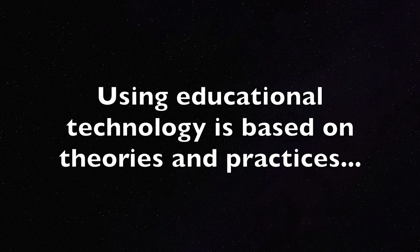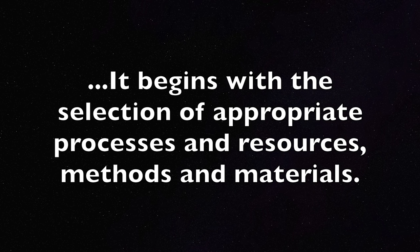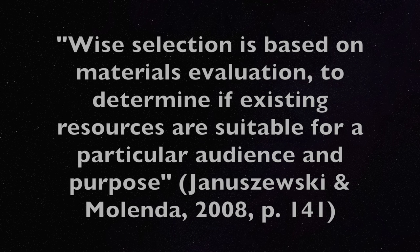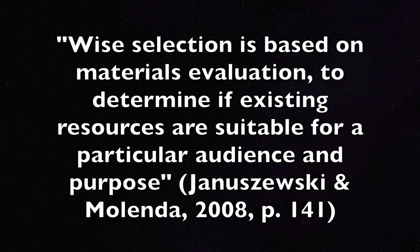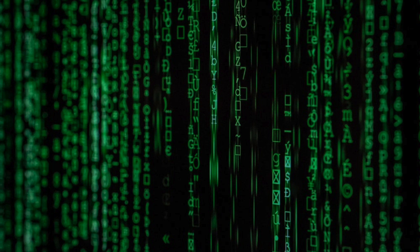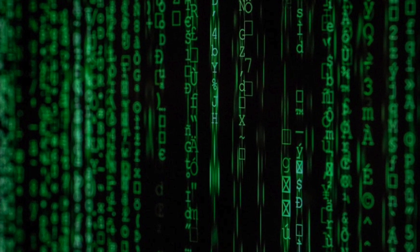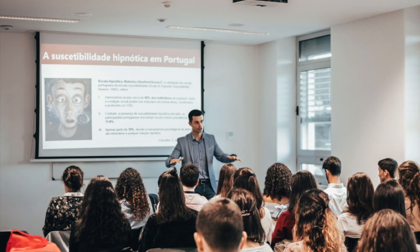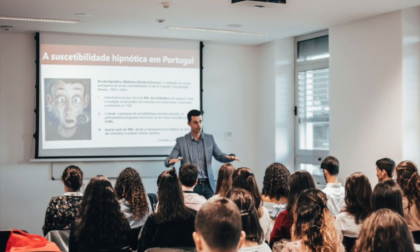Using educational technology is based on theories and practices. It begins with the selection of appropriate processes and resources, methods, and materials. Wise selection is based on materials evaluation to determine if existing resources are suitable for a particular audience and purpose. The learner uses the technology source after instruction and guidance. When a technology is new or unfamiliar, it may be tested prior to the learner being exposed to it. Technology is integrated into curriculum when an instructor incorporates the resource in an articulated fashion.